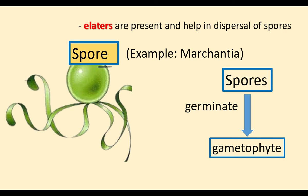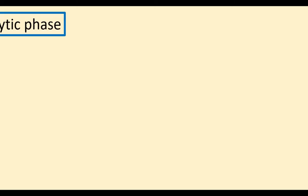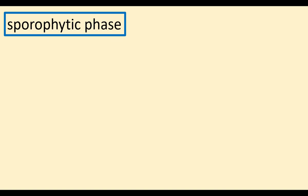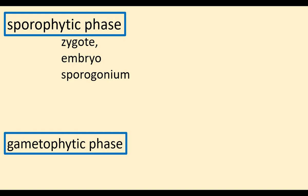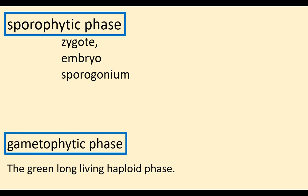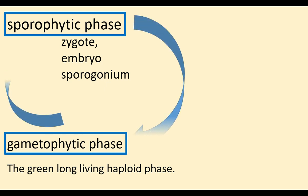The spore is haploid and the gametophyte is haploid, while the sporophytic phase is diploid. The zygote, embryo, and sporogonium (spore mother cells) are all diploid structures constituting the sporophytic phase. The green, long-lived haploid phase is the gametophytic phase. In bryophytes, the haploid gametophyte alternates with the diploid sporophyte — this is called alternation of generations.